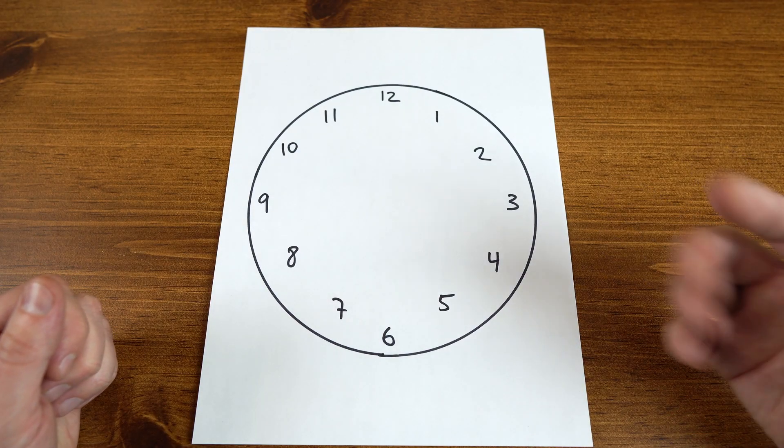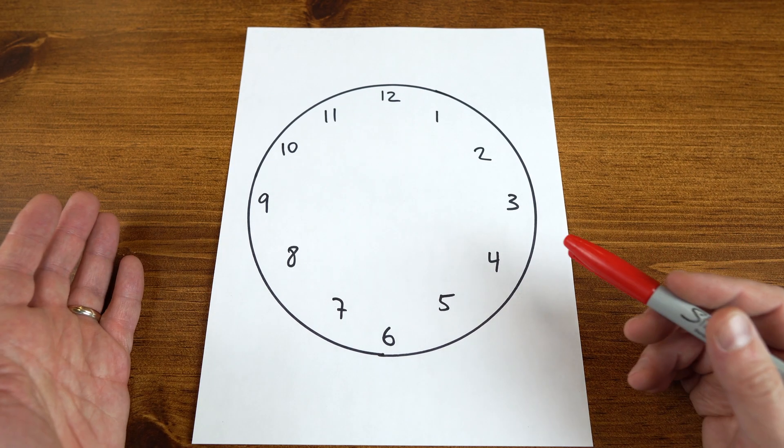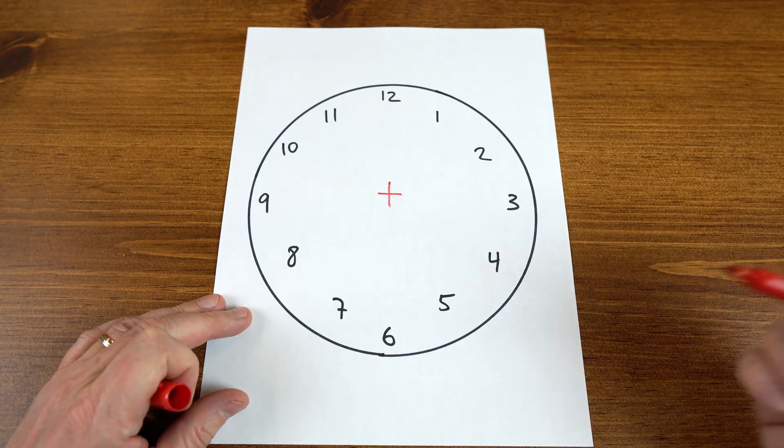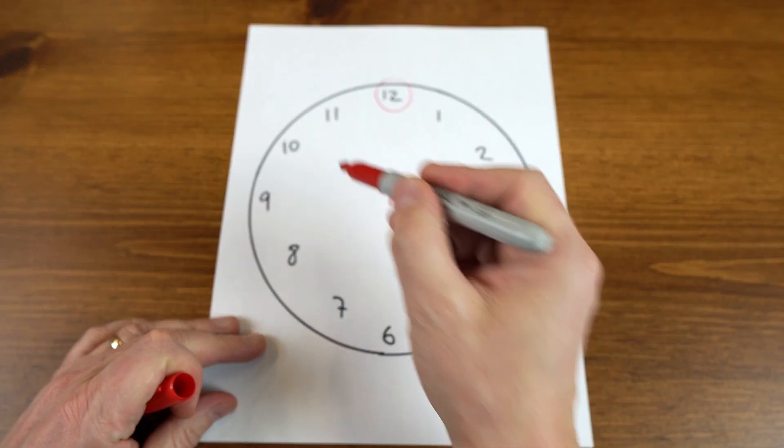All right, in today's video I'm going to show you four different number patterns using a simple clock dial. So first one we're going to make an addition and we're going to see how we can make number 12. Check this out.